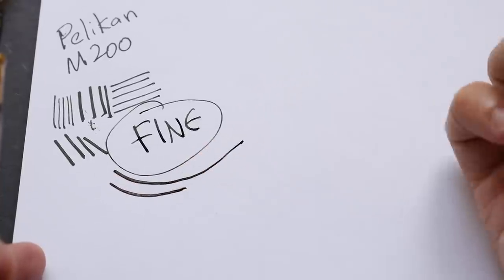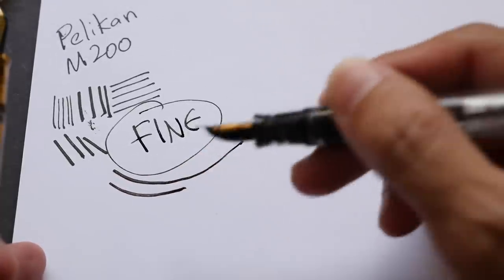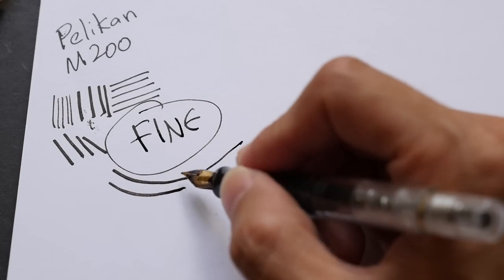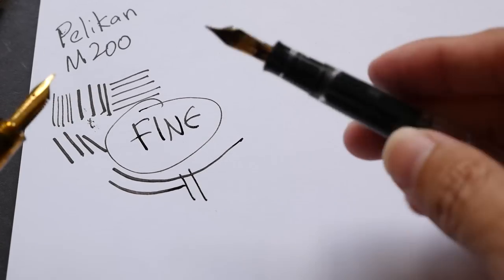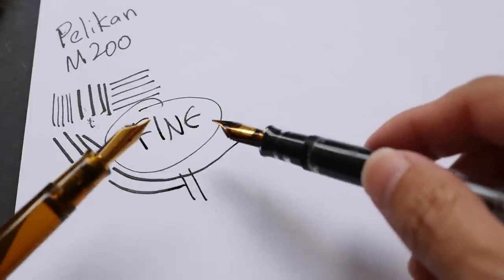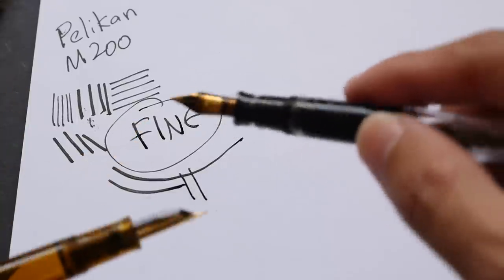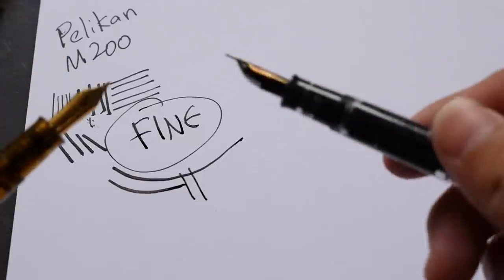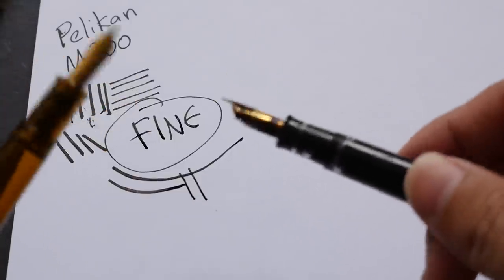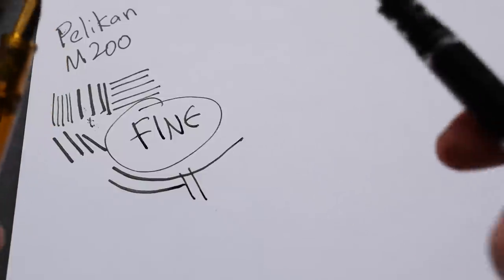But for this particular fine nib, you can just apply pressure and it will be able to produce a thicker line. This is really quite cool. So if you want to buy one, make sure to get the fine nib if you want the same variations in your stroke. Why is it good to have variations? Let me show you in a sketch.